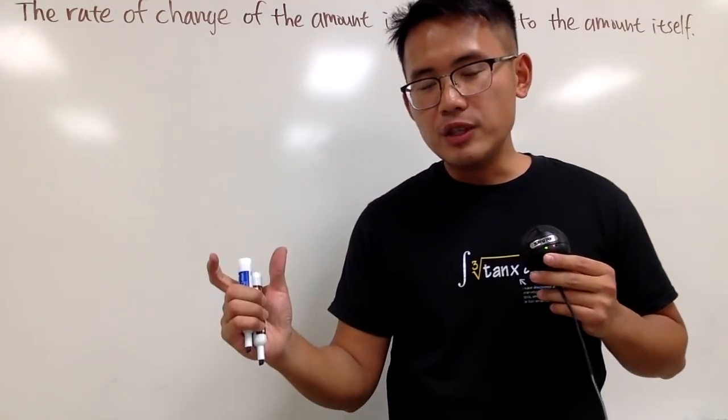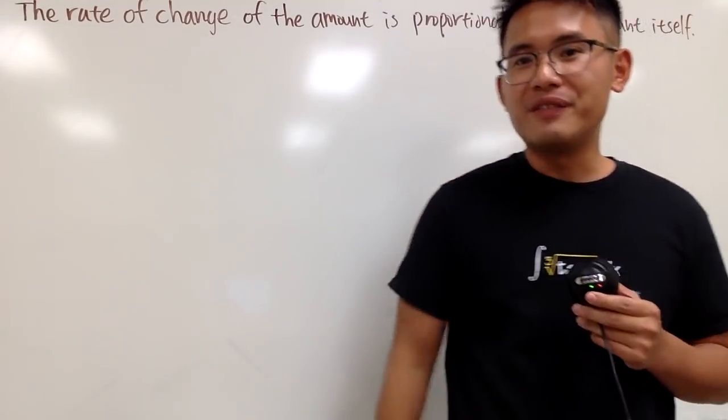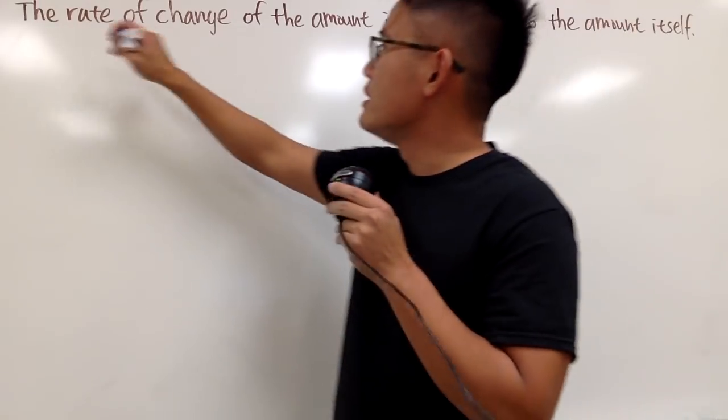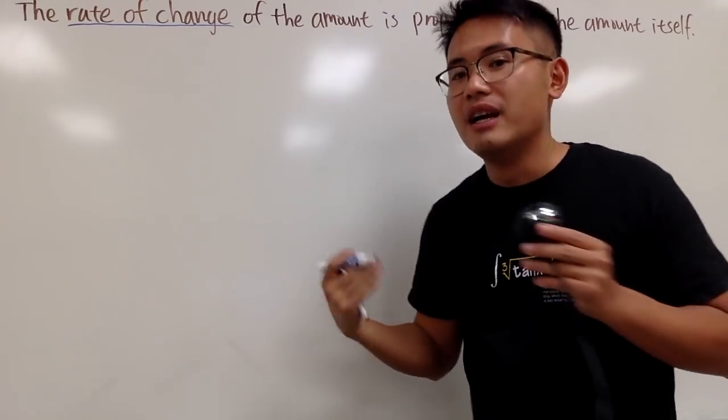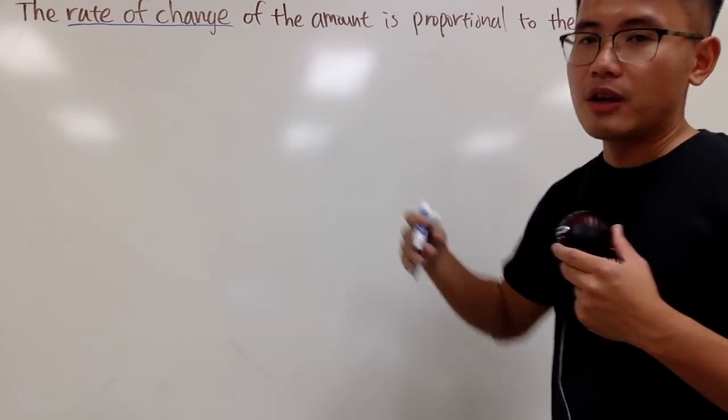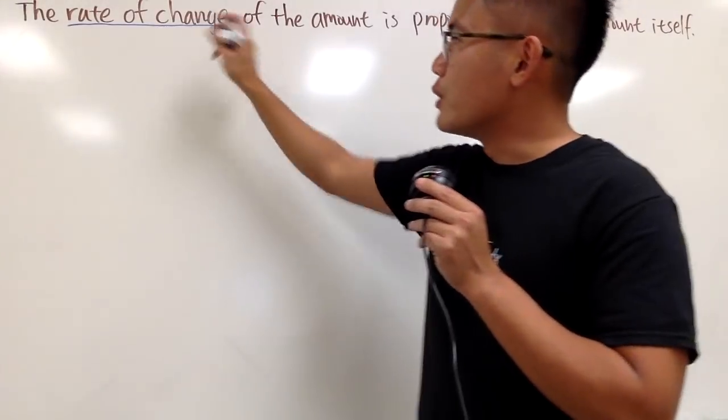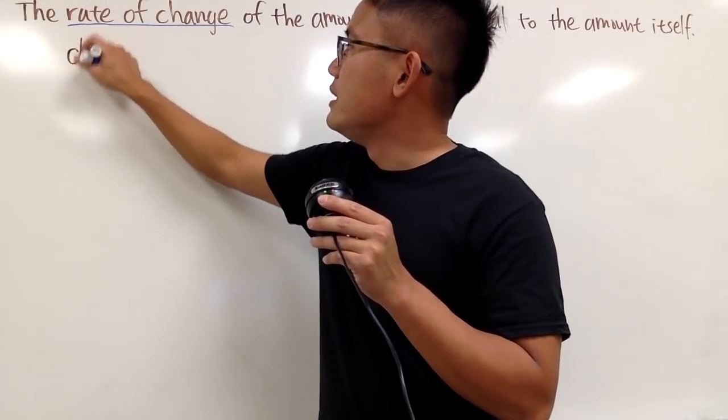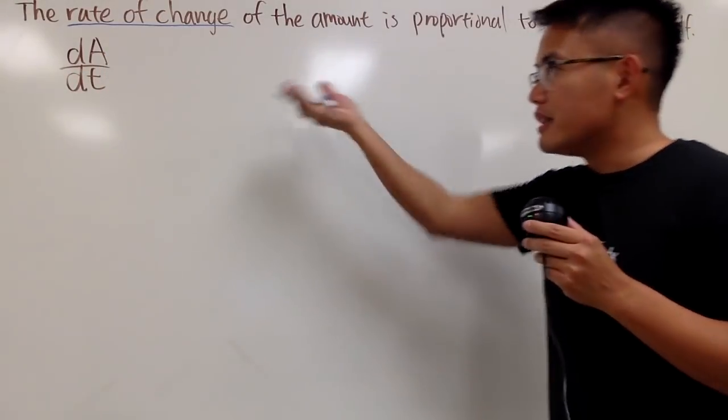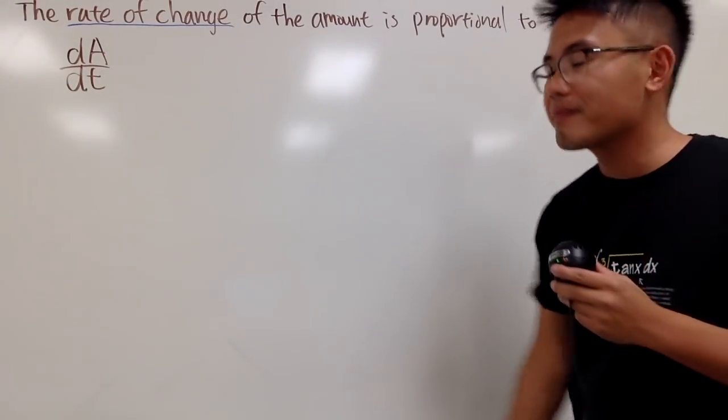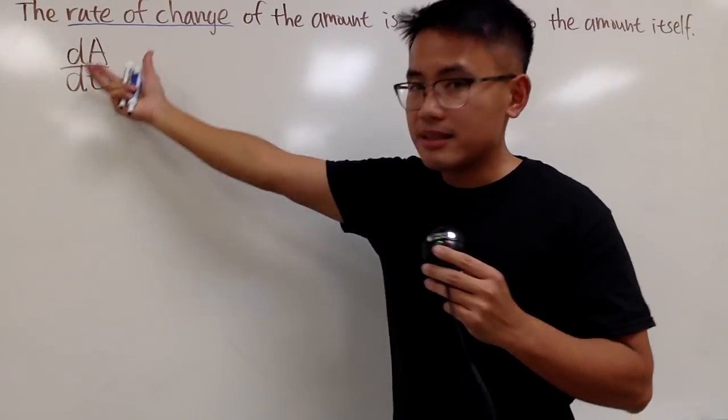First of all, a differential equation is pretty much an equation with derivative in it. And whenever you see the rate of change, that's the derivative. And right here, we are talking about the amount, so let's use some variables. Of course, let's use capital A for amount. So when you see this, you write it down as dA/dt. And usually things change with respect to time. So that's pretty much it when you see the rate of change. That's the derivative.